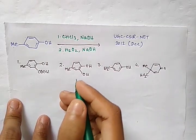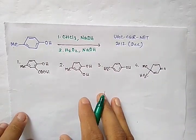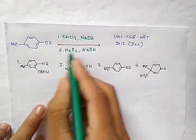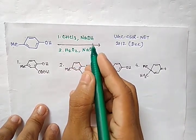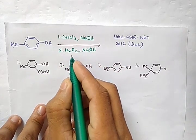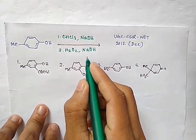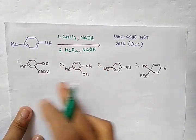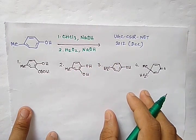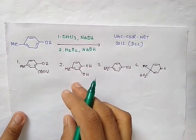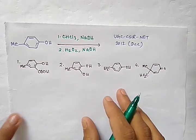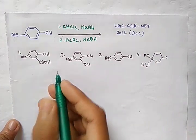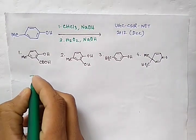Hello friends, today I am going to solve a problem. When para-cresol is treated with chloroform in the presence of sodium hydroxide, followed by hydrogen peroxide in the presence of base sodium hydroxide, what is the product? This problem is from UGC CSIR NET 2012 December. In order to solve this problem, you should know the Reimer-Tiemann reaction.